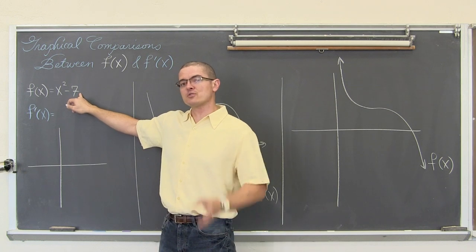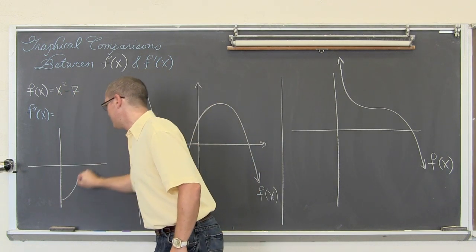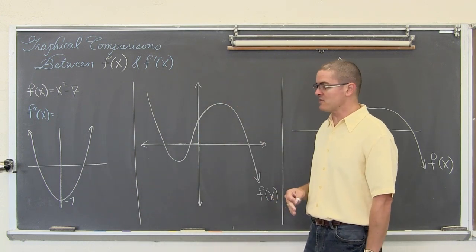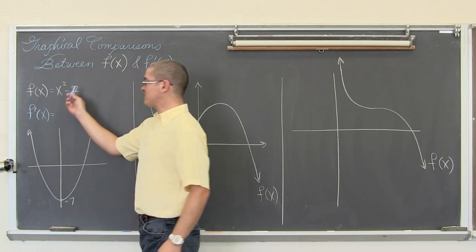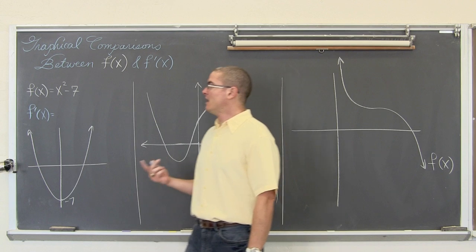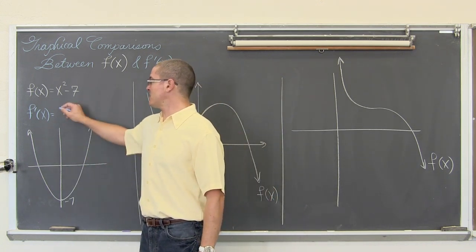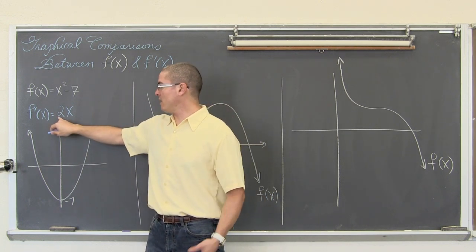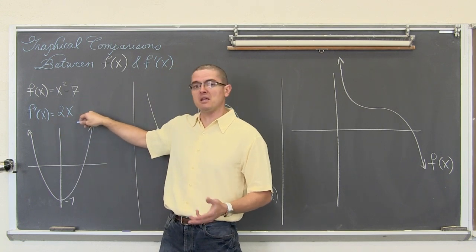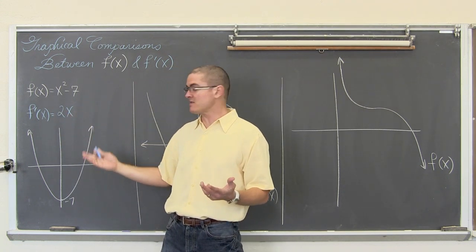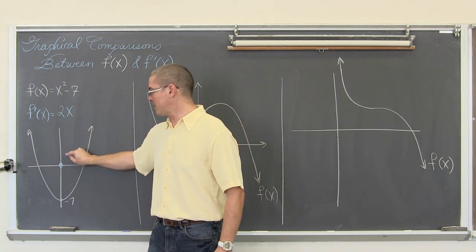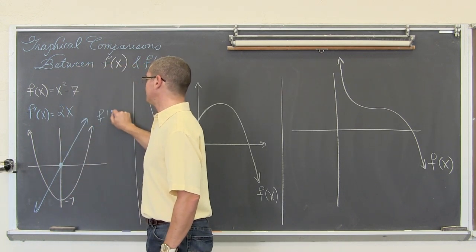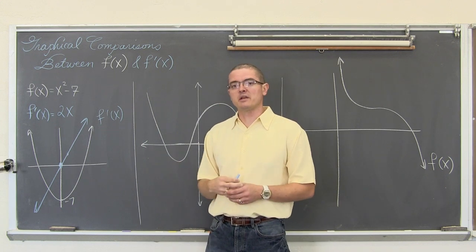This is a parabola opening up that has a vertical shift down of 7 units, so it looks something like this, with its minimum value or vertex at the y value of negative 7. Well, f prime of x — now that we know some basic differentiation rules — is going to be just 2x. Graphing this derivative on the same xy axis, it is just 2x, which is y = mx + b, a line with a y-intercept of zero and a slope of two, going up two and over one.